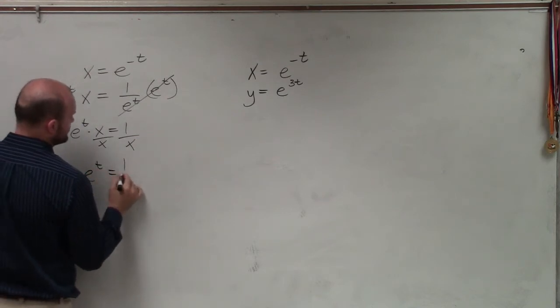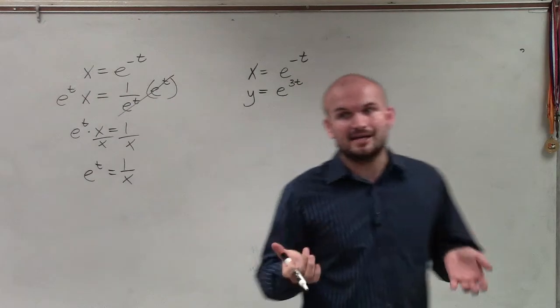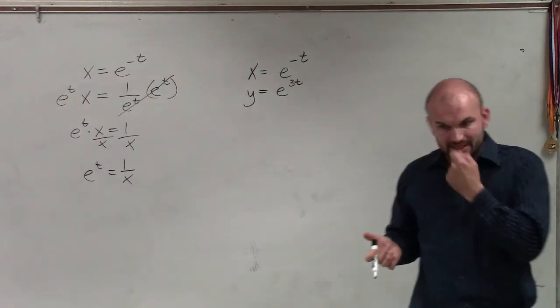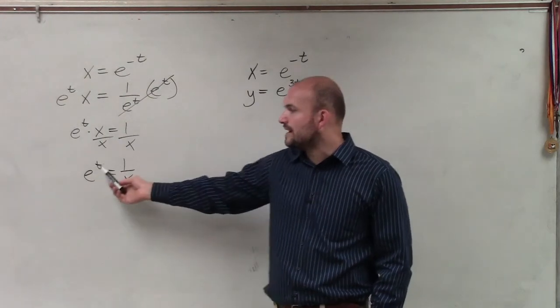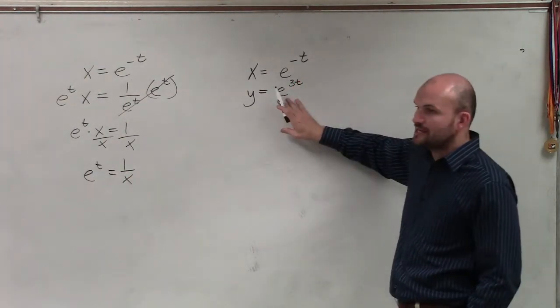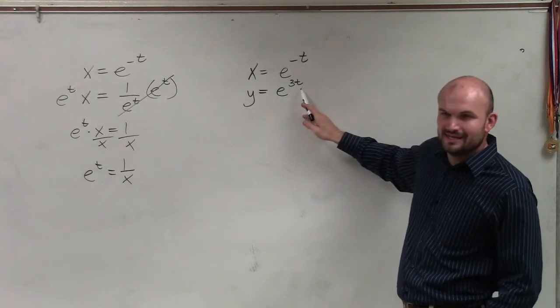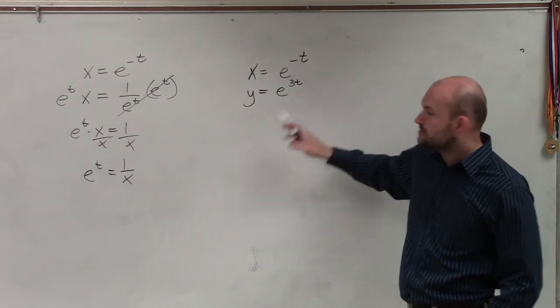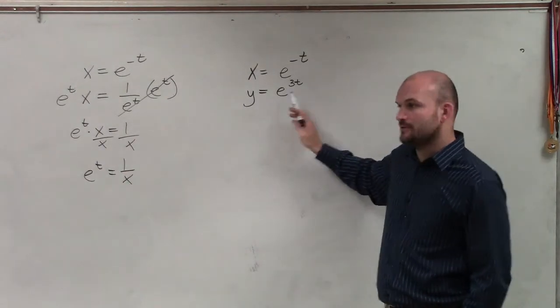And I have e to the t equals 1 over x. The reason why I'm going to leave it as e to the t and not use the logarithm, because I want to be able to evaluate when I can plug in e to the t. I notice that in this equation, I can plug in e to the t rather than just plugging in the t, like putting in a logarithm up there. So I can evaluate for e to the t right into this equation.